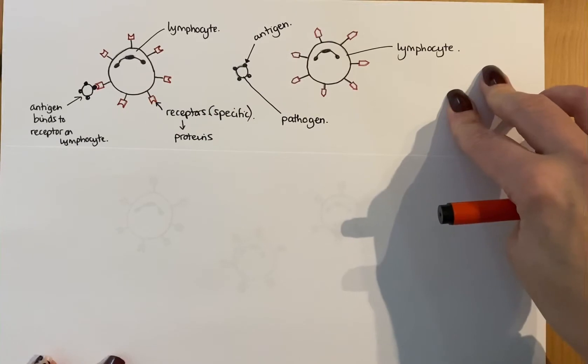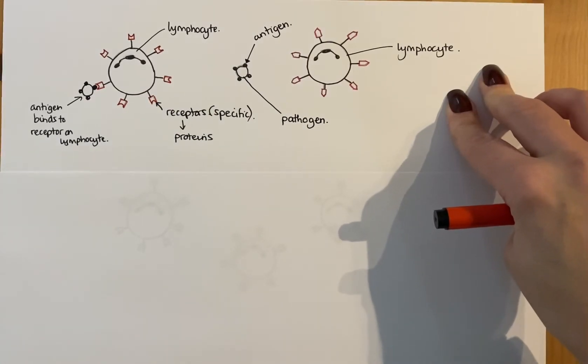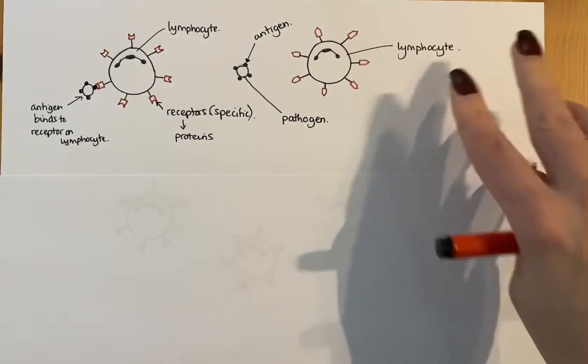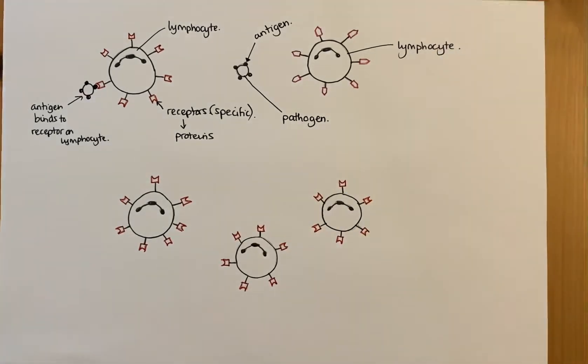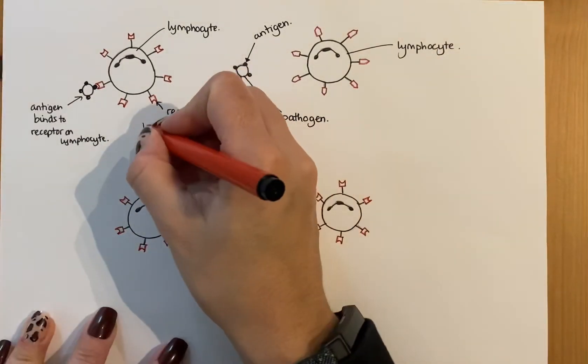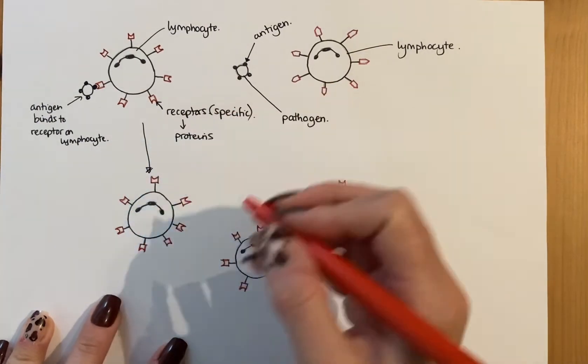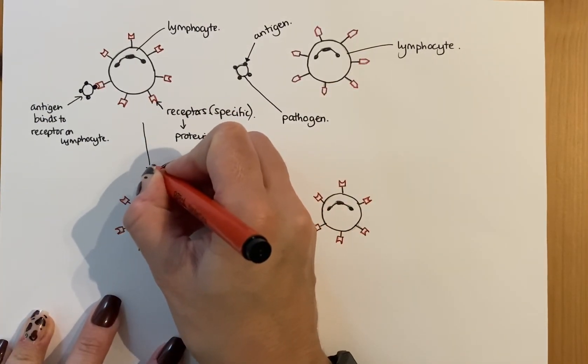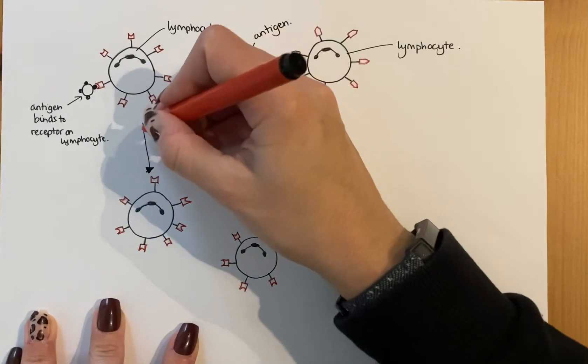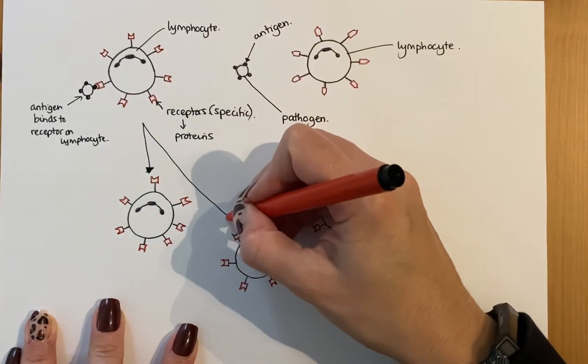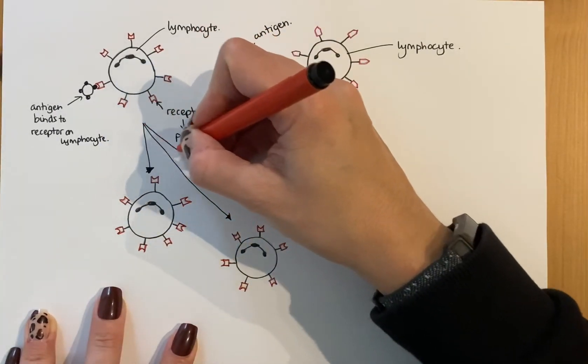So what happens next is then that this cell then divides and makes copies of itself. So it makes clones and that's what I've shown you here. This is a clone of the one above. Now clones are identical copies. These might not be exactly identical to what I've drawn because I'm not an artist, but it gives you the gist.